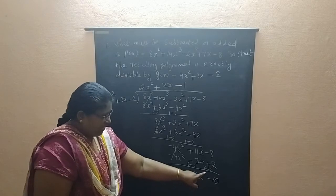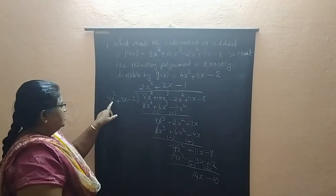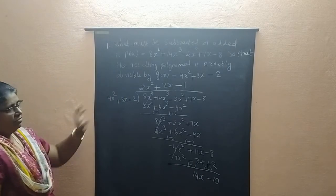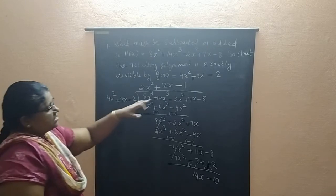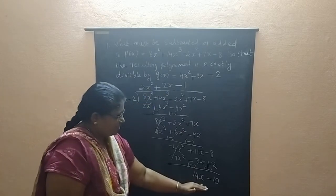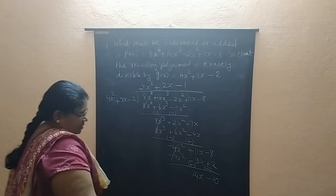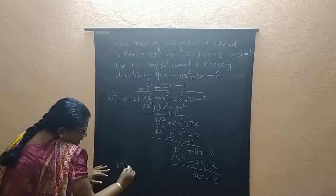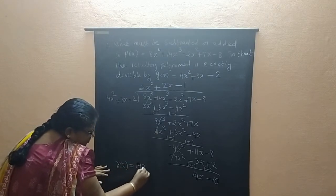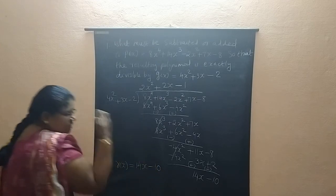Why? Because its degree is less than degree of G of X. So this is our quotient and this is our remainder. So we got only remainder. Remainder is 14X minus 10.